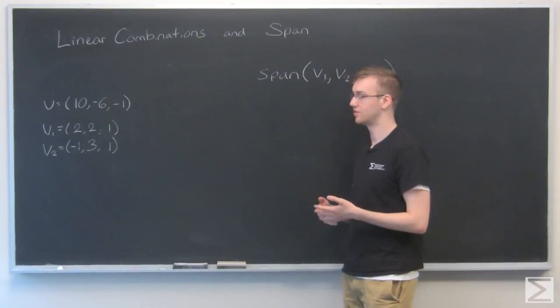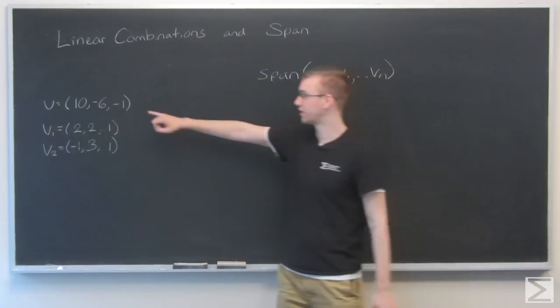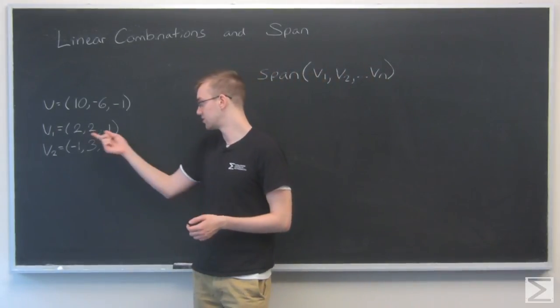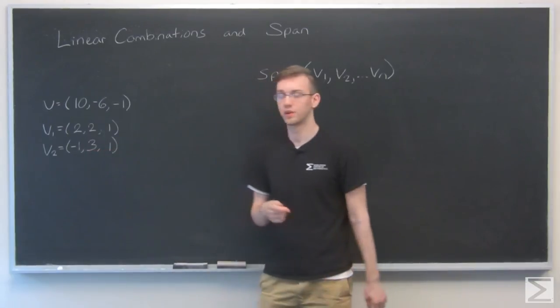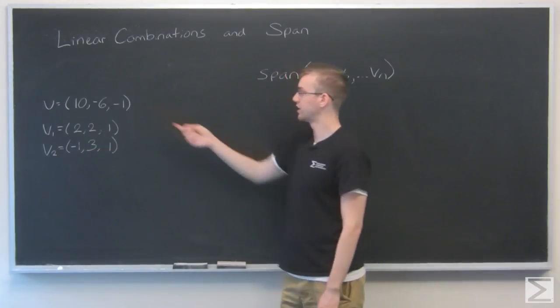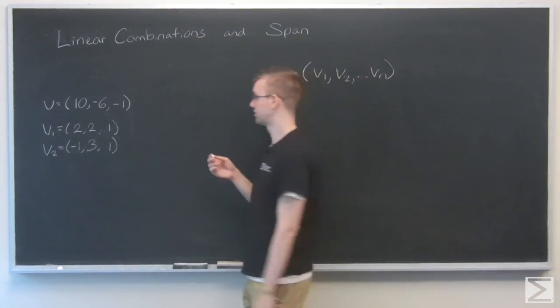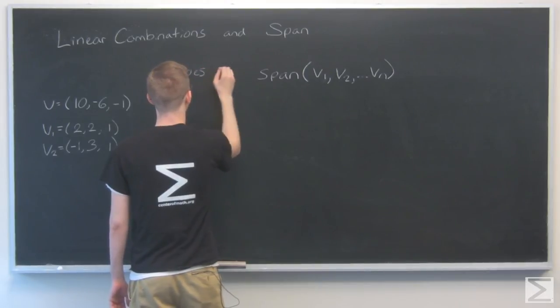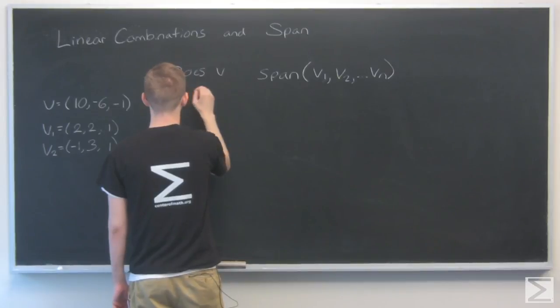So one question I thought we could do to help explain this concept of span is here I have a vector 10, minus 6, minus 1, and then v1 and v2, which is 2, 2, 1, and minus 1, 3, 1. And my question is, does this vector v lie in the span of v1, v2?